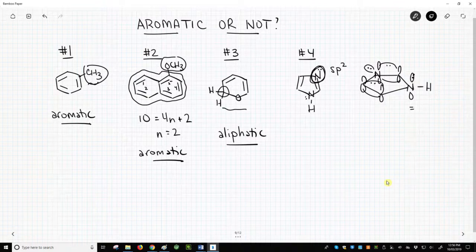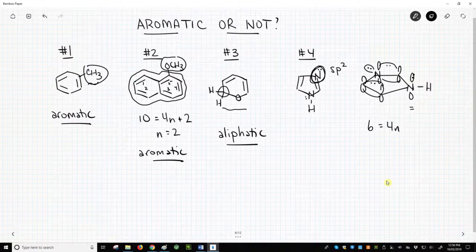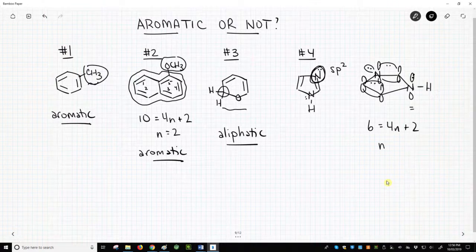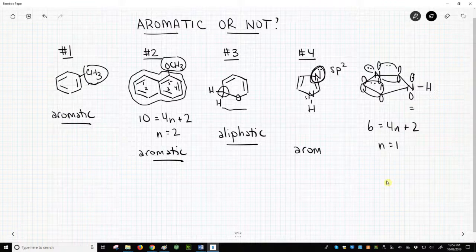So this has six electrons, four in the pi bonds, two in that one lone pair in the p orbital. So, six equals four n plus two, n equals one. This molecule, imidazole, is aromatic.